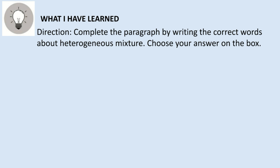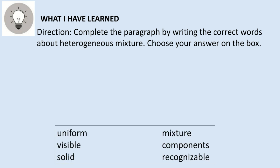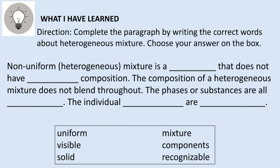What I Have Learned. Complete the paragraph by writing the correct words about heterogeneous mixtures. Choose your answer from the box: uniform, visible, solid, mixture, components, recognizable. Non-uniform heterogeneous mixture is a blank that does not have blank composition. The composition of a heterogeneous mixture does not blend throughout. The phases or substances are all blank; the individual blank are blank.